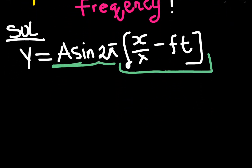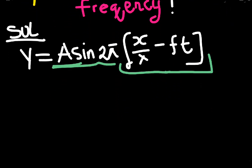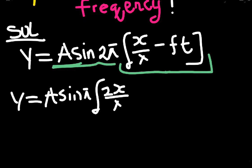The next thing I'll do is open my bracket. In opening my bracket it becomes Y = A sin(2x/λ - 2ft). Notice I've multiplied everything inside the bracket by 2π. I leave my π outside. Next is just comparison.